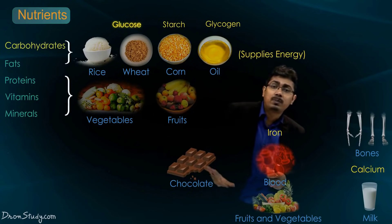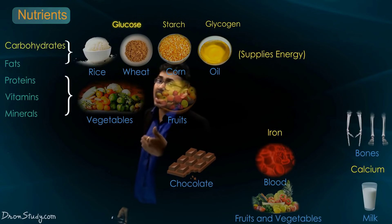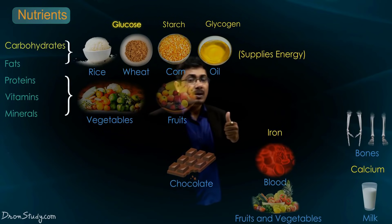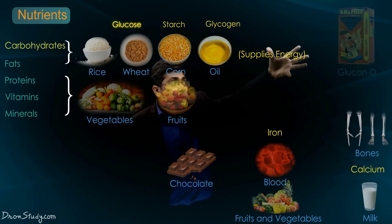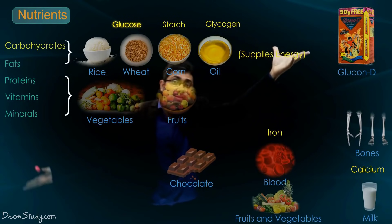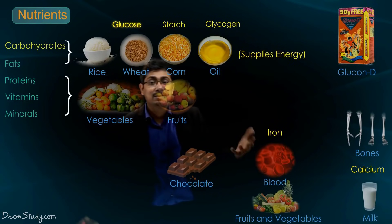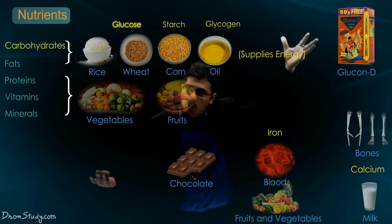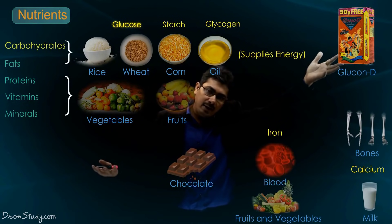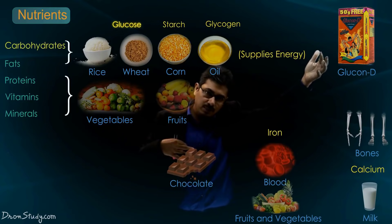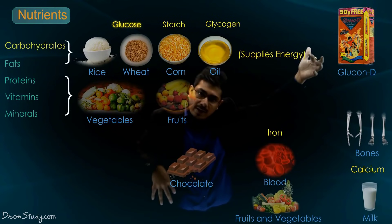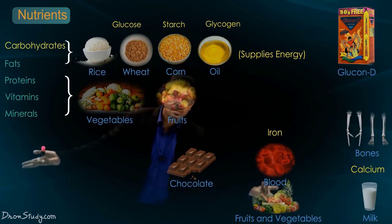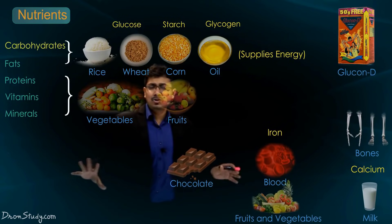Let's talk about glucose - glucose ek bahut important carbohydrate hota hai. Students, is chapter mein aage hum bahut zyada iske baare mein padenge. Aapko pata bhi hai glucose ke baare mein - jaise yeh glucose aapne piya hoga, jaan mein jaan aa jaati hai peete hi. Usme ek white powder hota hai, basically kuch nahi woh glucose hai. Usmein bahut saara carbohydrate hota hai, toh jab aap usko peete ho pani milaake, toh aapko bahut saara carbohydrate milta hai, toh aapko bahut energetic feel hota hai, aur aapko jaan mein jaan aa jaati hai peete hi.